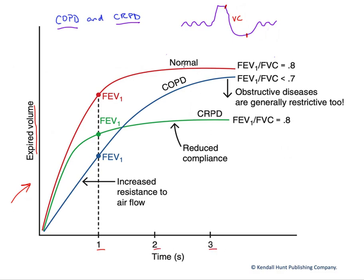In the normal patient, what we find is that their expiratory volume over one second is quite good. They actually move a relatively large fraction of their vital capacity — this maximum volume moved in one second is actually about 80% or even a little bit higher than that.